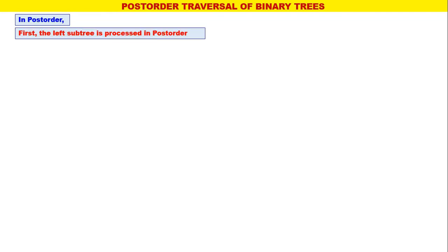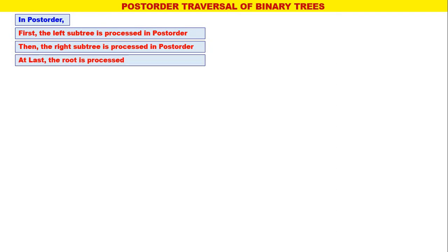My dear students, in this video we will understand the post-order traversal of binary trees. In post-order, first the left sub-tree is processed in post-order, then the right sub-tree is processed in post-order, and at last the root is processed. The name post-order comes from the root being processed after the left sub-tree and the right sub-tree — the processing of the root is postponed. Therefore, the name post-order.